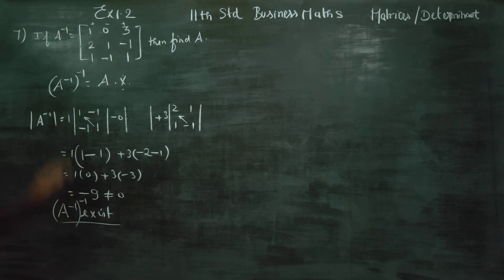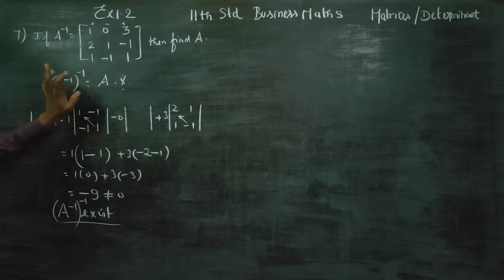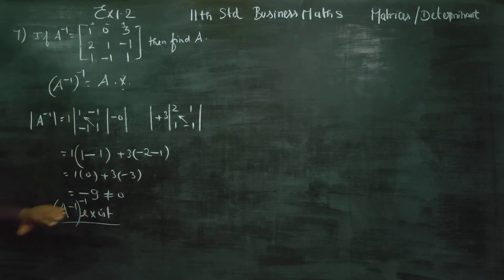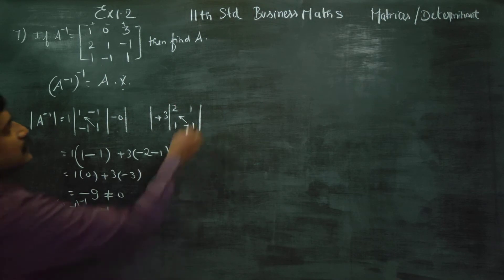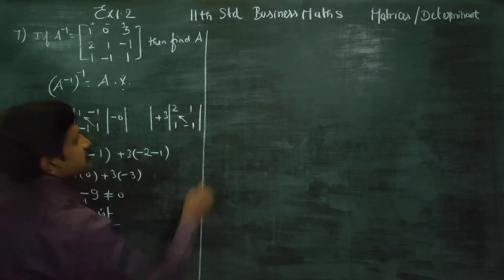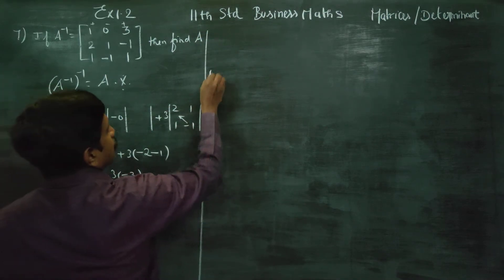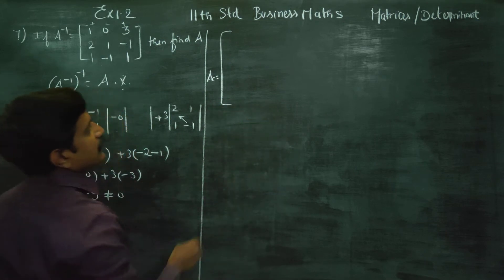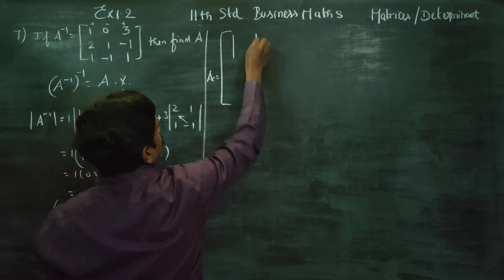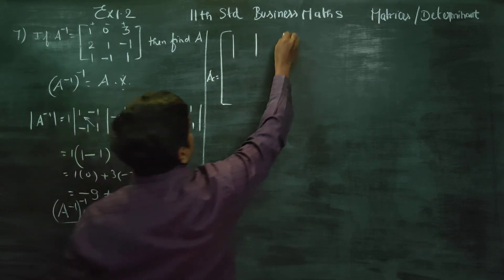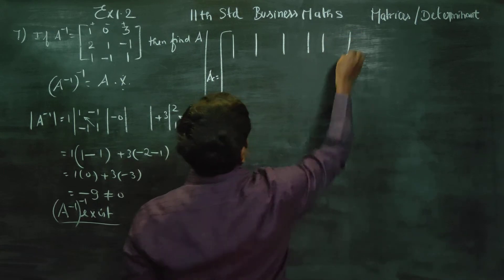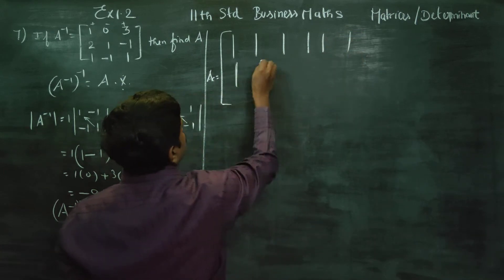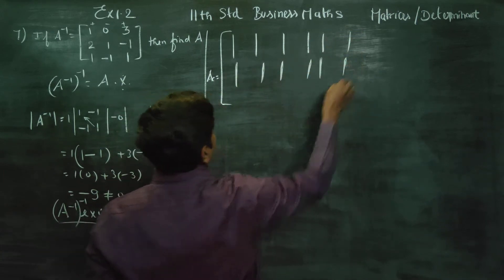Now, the third step is the cofactor matrix. The cofactor matrix elements are: 1, 2, 3, 4, 5, 6, 7, 8. The sign pattern is: plus, minus, plus.